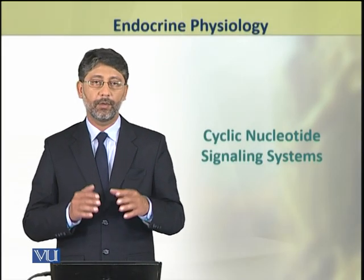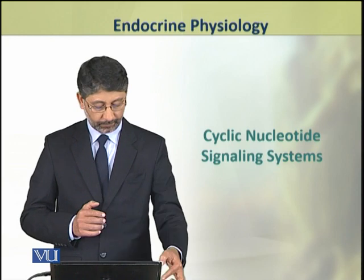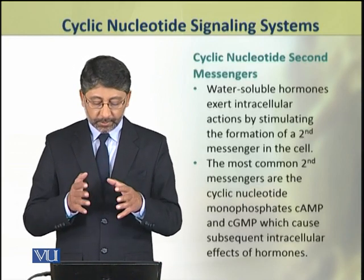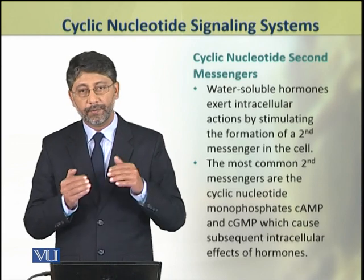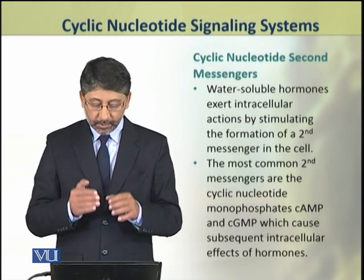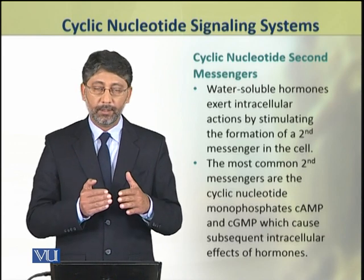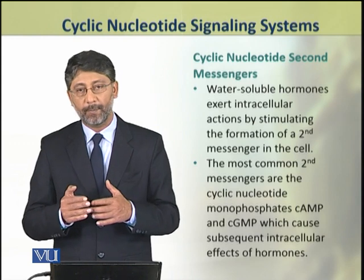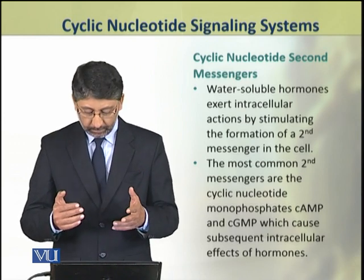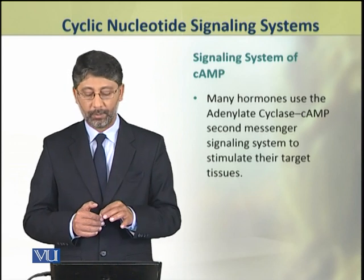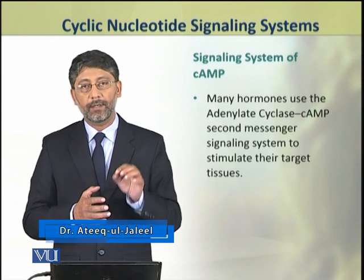Dear students, in this topic we shall discuss in detail the cyclic nucleotide signaling systems. Water-soluble hormones act through stimulating the formation of second messengers. The most common second messengers are the cyclic nucleotide monophosphates — cyclic AMP and cyclic GMP. These second messengers cause subsequent intracellular effects of the hormone. We shall discuss in detail the signaling system of cyclic AMP.